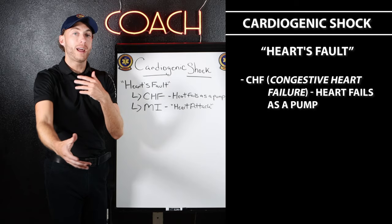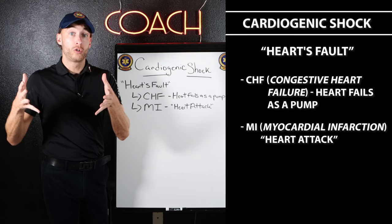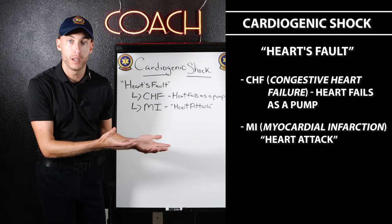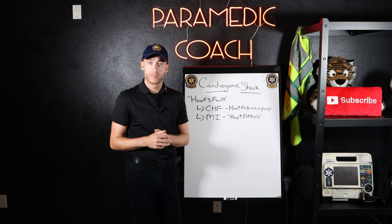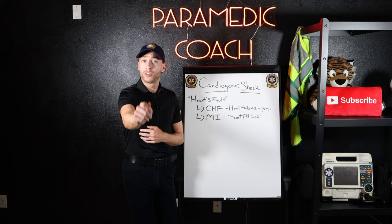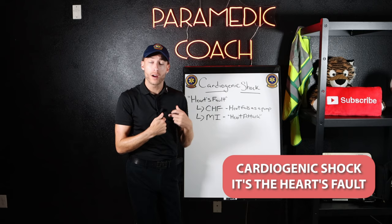What else can happen in cardiogenic shock? MI — myocardial infarction. Too much heart muscle has died due to a coronary artery being blocked. Simply put, cardiogenic shock is the heart's fault. The heart made it happen, whether it's CHF or MI.